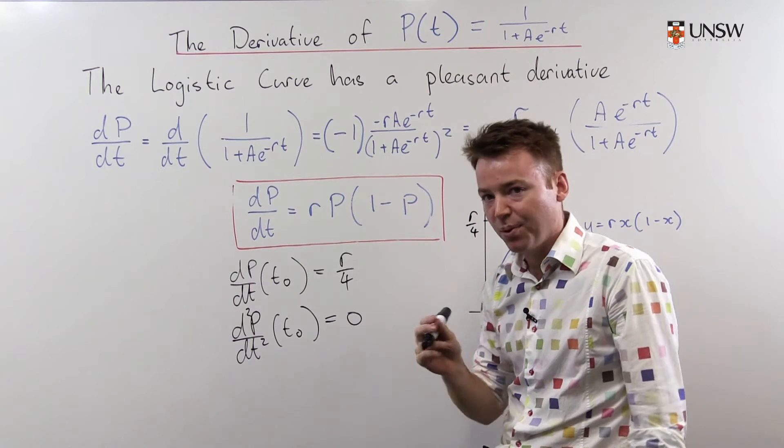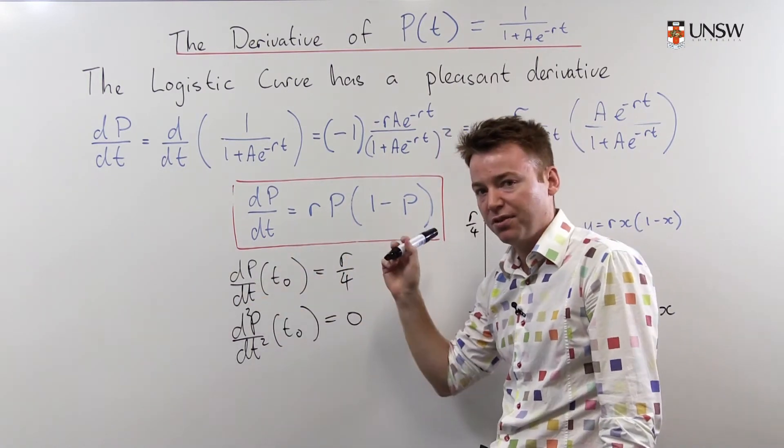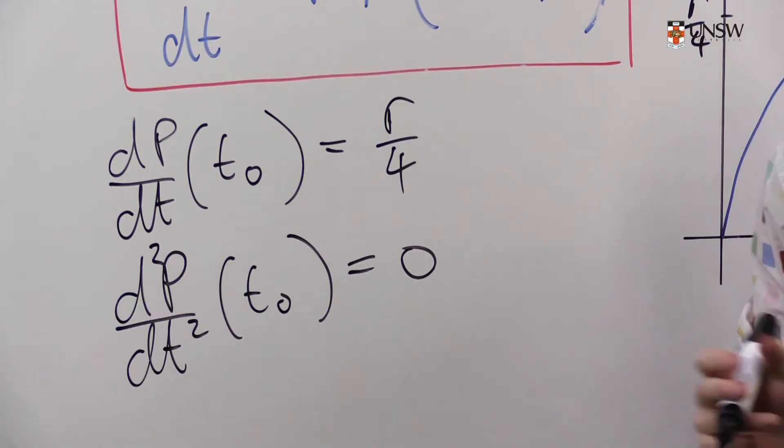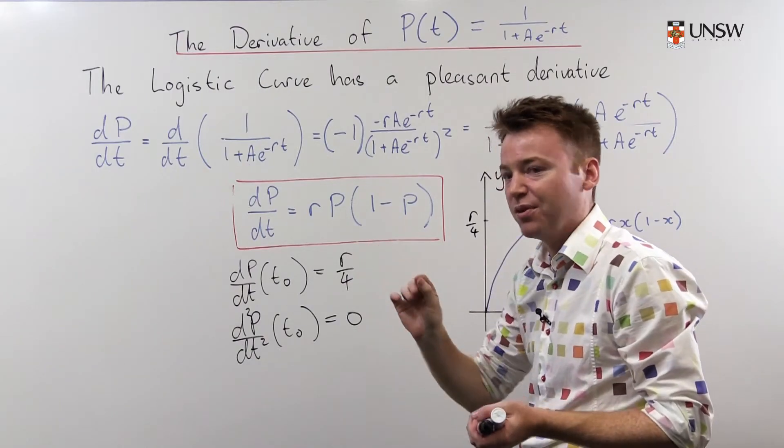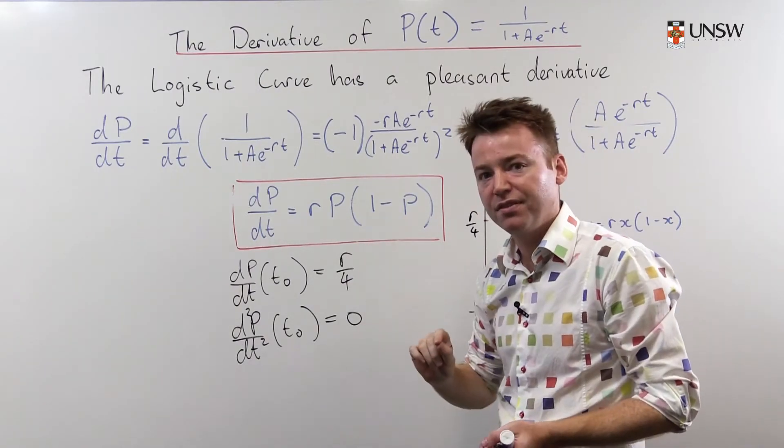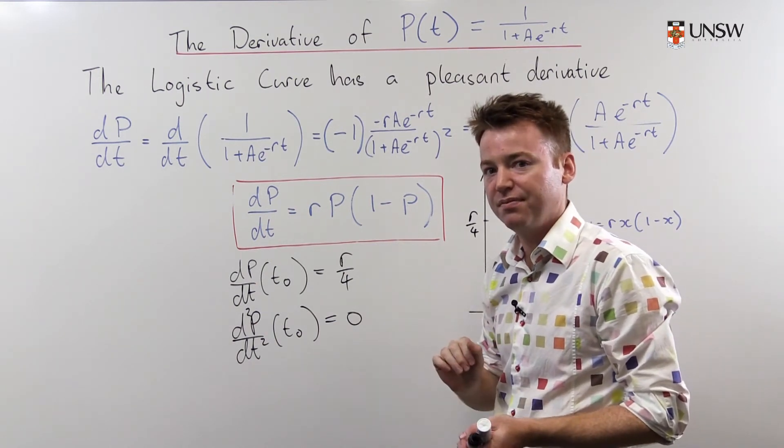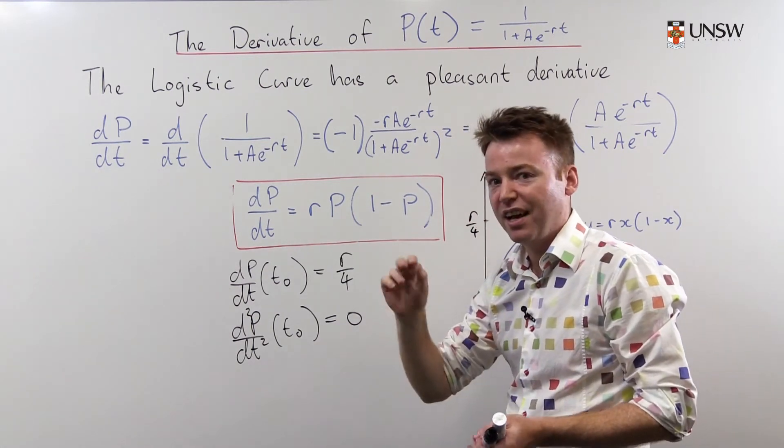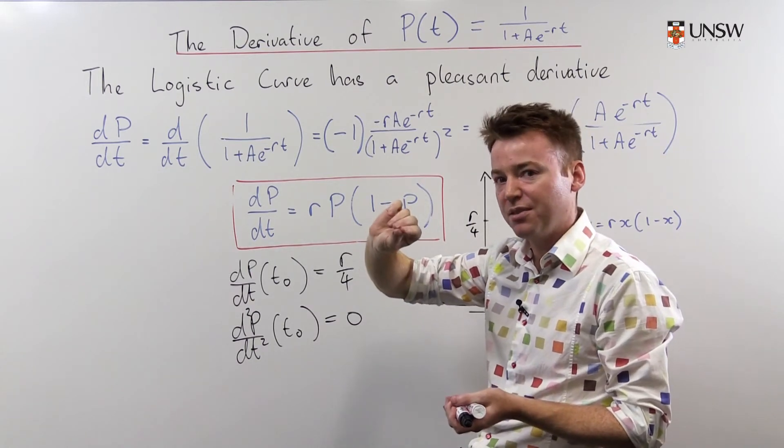So this midpoint, where it achieves its fastest rate of growth, is actually a point of inflection, which gives you a way of finding the midpoint. If you have some data, all you have to look for is the point of inflection. And that tells you where the midpoint of your population is. So you can just look at data now, and eyeball the midpoint, and that tells you that the population is half its possible maximum.